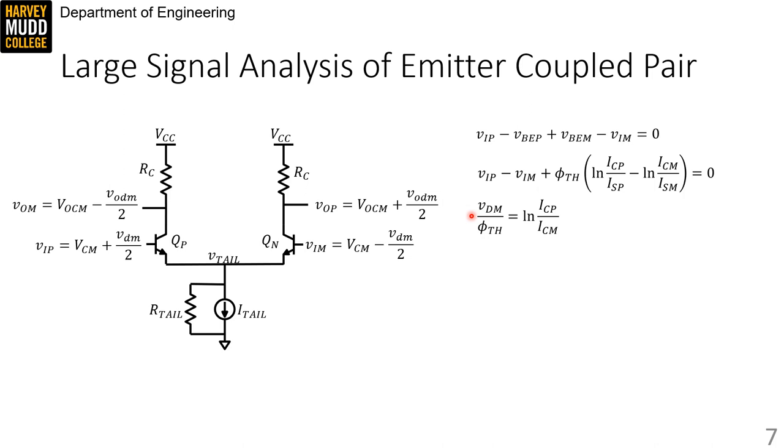Exponentiating the expression gets us to a relationship that I find evocative. The ratio of current in the P branch to the M branch is an exponential function of VDM over phi_TH. That means that increasing the differential mode rapidly causes ICP to get bigger than ICM, and decreasing it does the opposite.